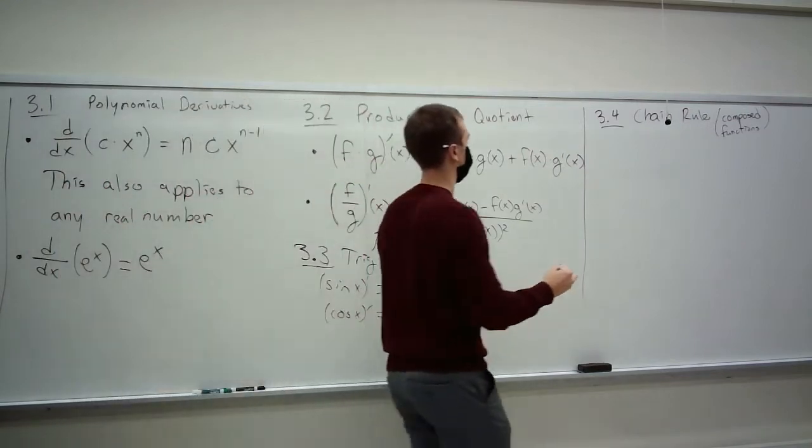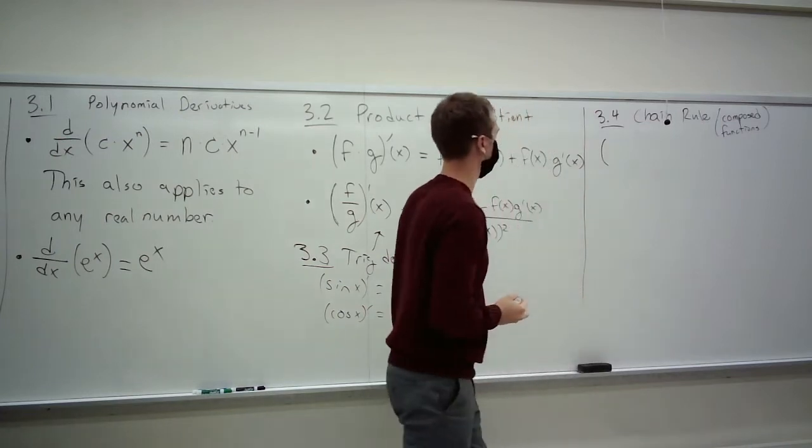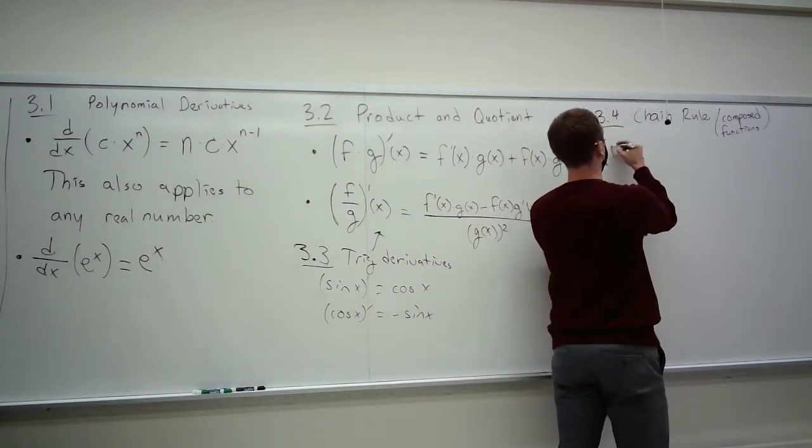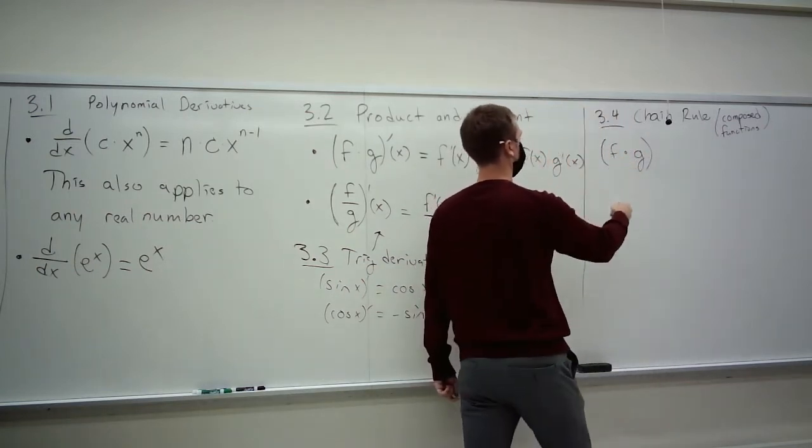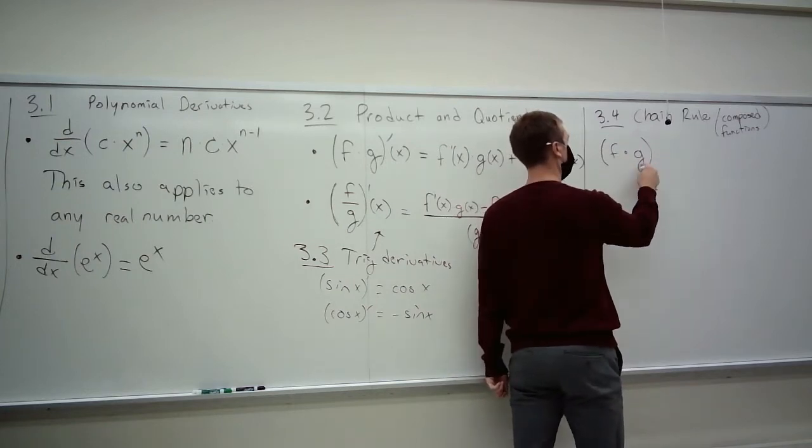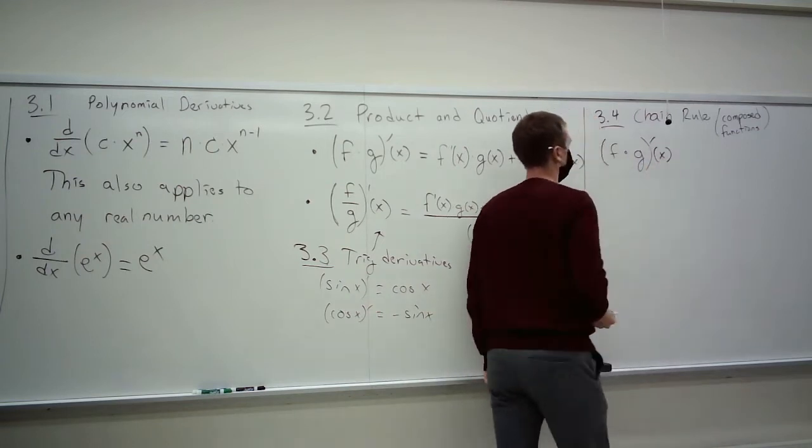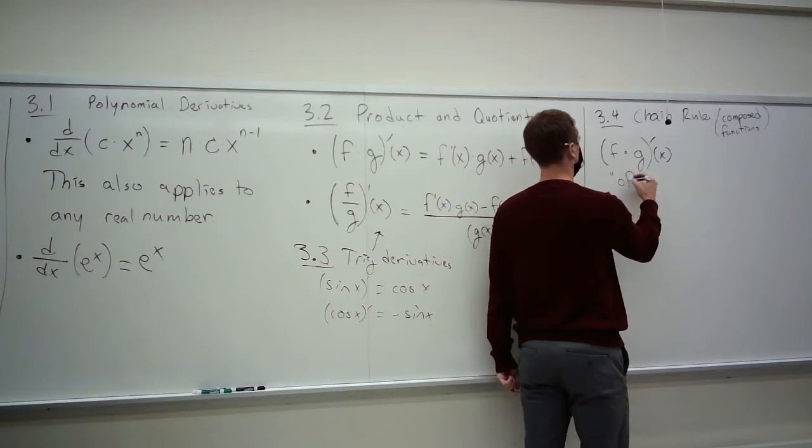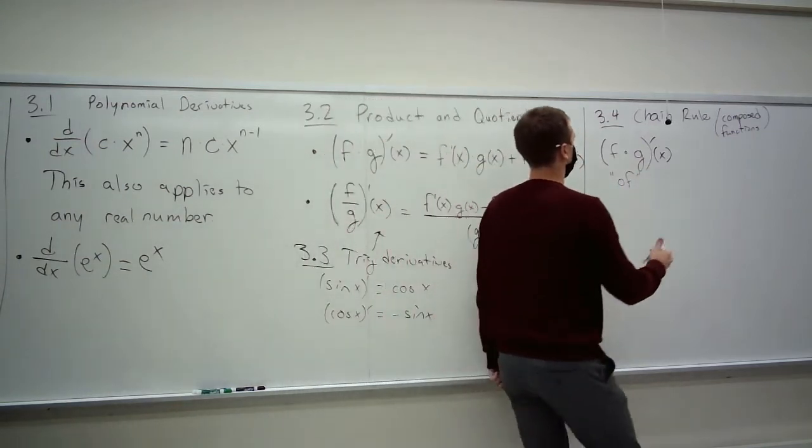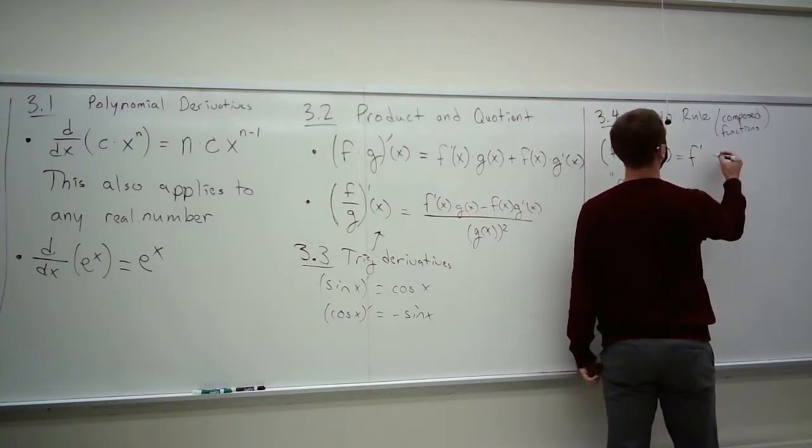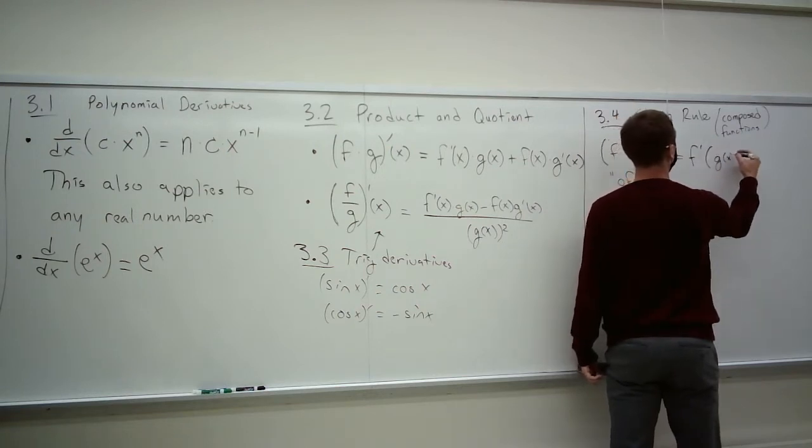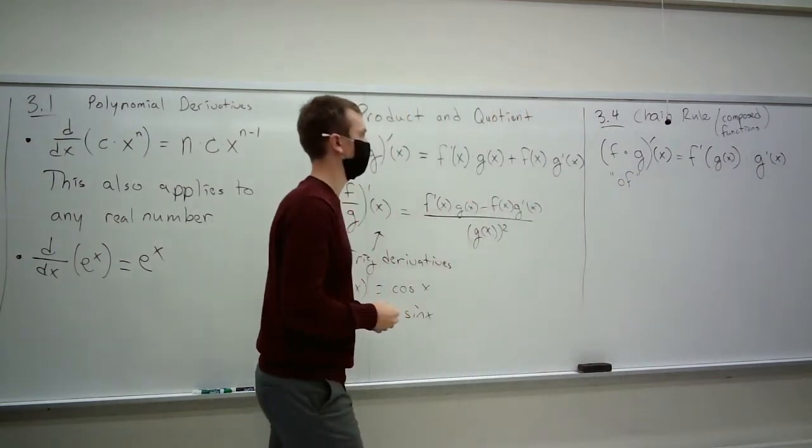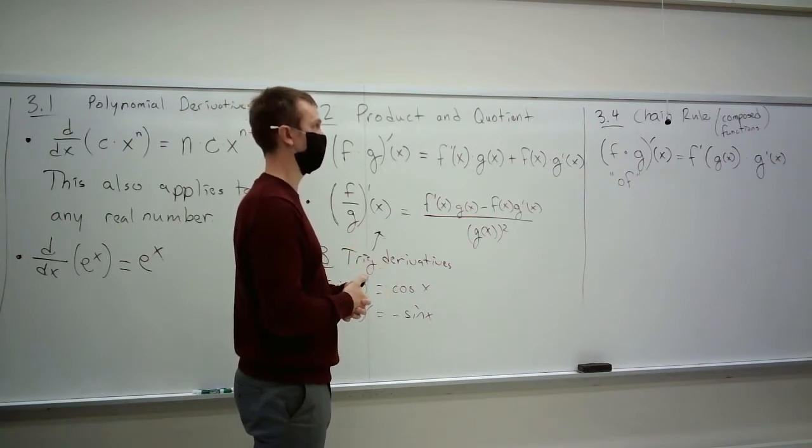And one function is the input to another function. Well, the chain rule gives us that. The chain rule says, if you've got f of g, if you have a function we call the outer, which takes another function as input I call the inner. This little circle is literally read of. You can think of it as a tiny o. And this derivative is the derivative of f composed with the inner, times the derivative of the inner.